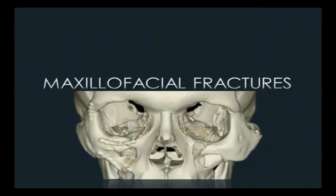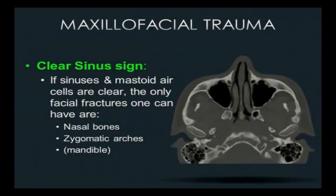One of the best take-home signs is the clear sinus sign. If your paranasal sinuses and mastoid air cells are free of fluid and clear, the only facial fractures you'd have are nasal bones and zygomatic arches — and if the mandible is included in your scan, the mandible is fair game too. Anything with a wall up against a sinus will invariably cause hemorrhage into that sinus when that wall is broken. It's a very good tool to get through volume quickly.